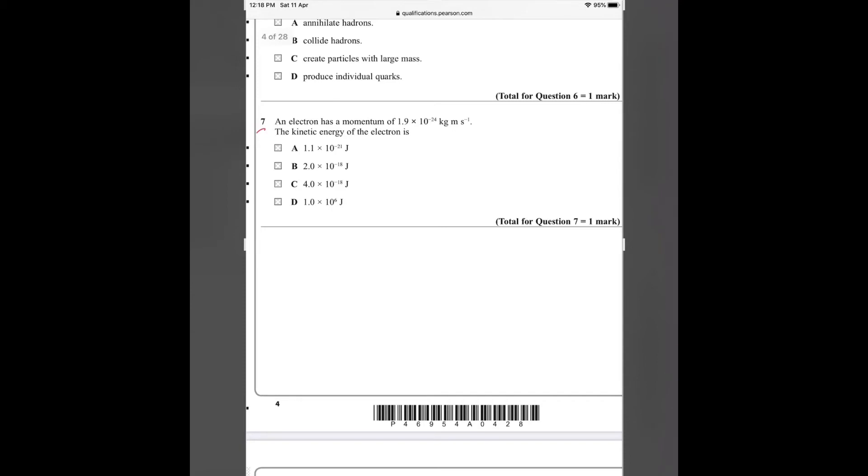Number 7. An electron has momentum of 1.9 into 10 to the power minus 24 kg meter per second. Find the kinetic energy of the electron. We know the formula from the physics book: K equals P square by 2M, where P is the momentum, M is the mass of the electron, and K is the kinetic energy. K would be P square—P is 1.9 into 10 to the power minus 24 square—divided by 2 into M. The value of the mass of the electron will be given at the end of the question paper, which is 9.11 into 10 to the power minus 31. The final K value for this answer will be 2 into 10 to the power minus 18 joules. So the answer is B.